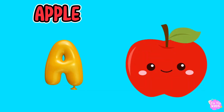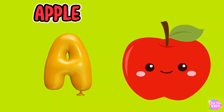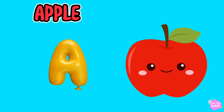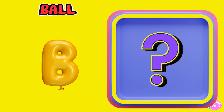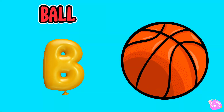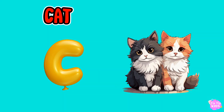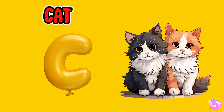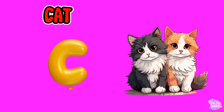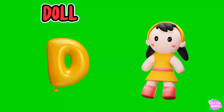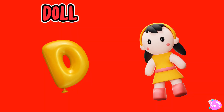A is for apple, a-a-apple. B is for ball, f-f-ball. C is for cat, c-c-cat. D is for doll, d-d-doll.